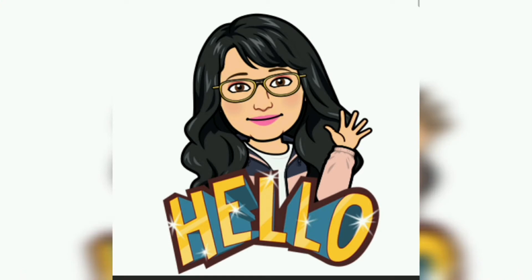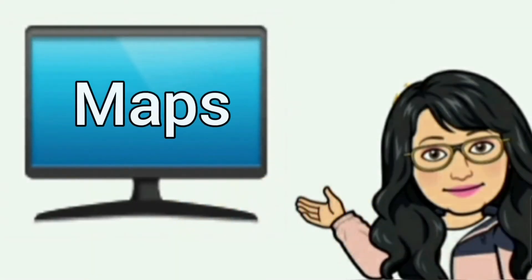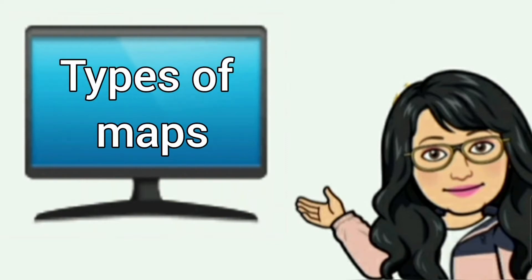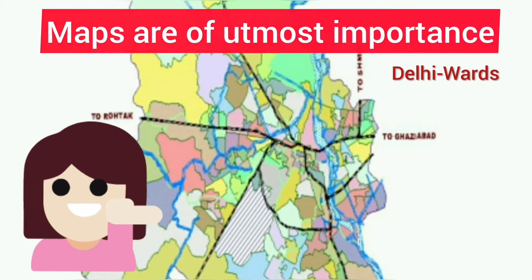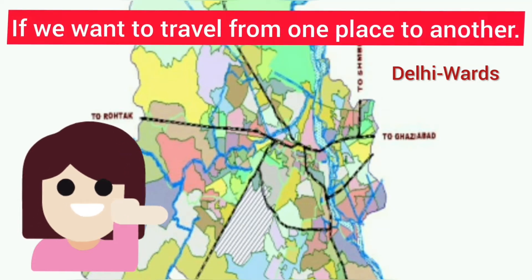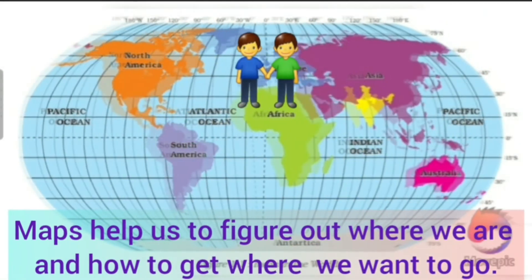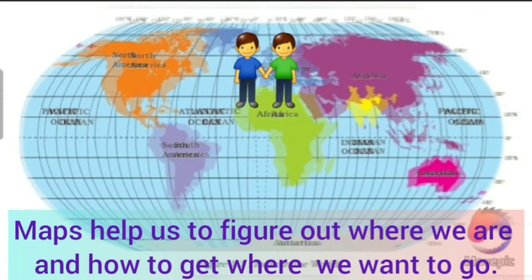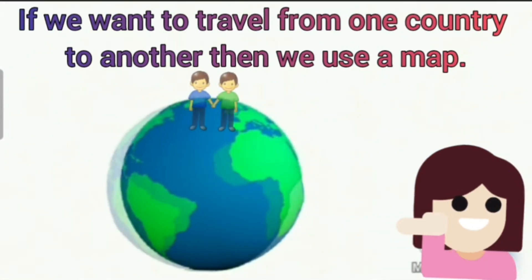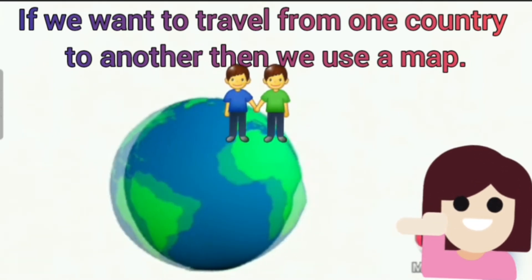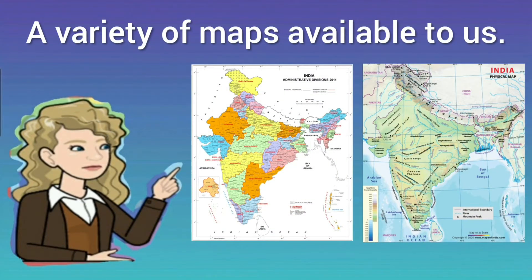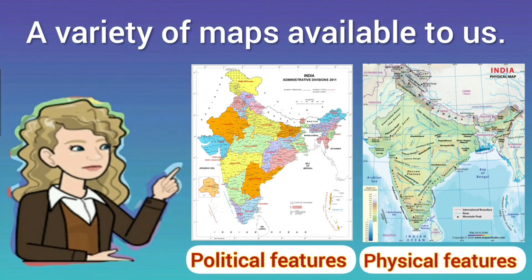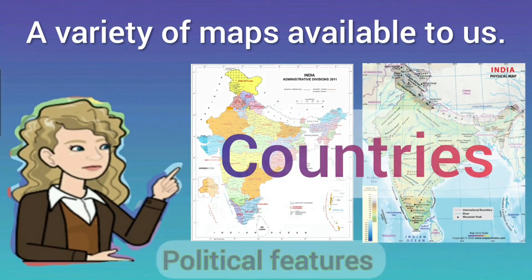Hello everyone, I hope you are doing good. In this video you will learn about maps and their different types. We all know maps are of utmost importance if we want to travel from one place to another. They help us to figure out where we are and how to get where we want to go. There are a variety of maps available to us, showing different political and physical features of states, countries, and the world.